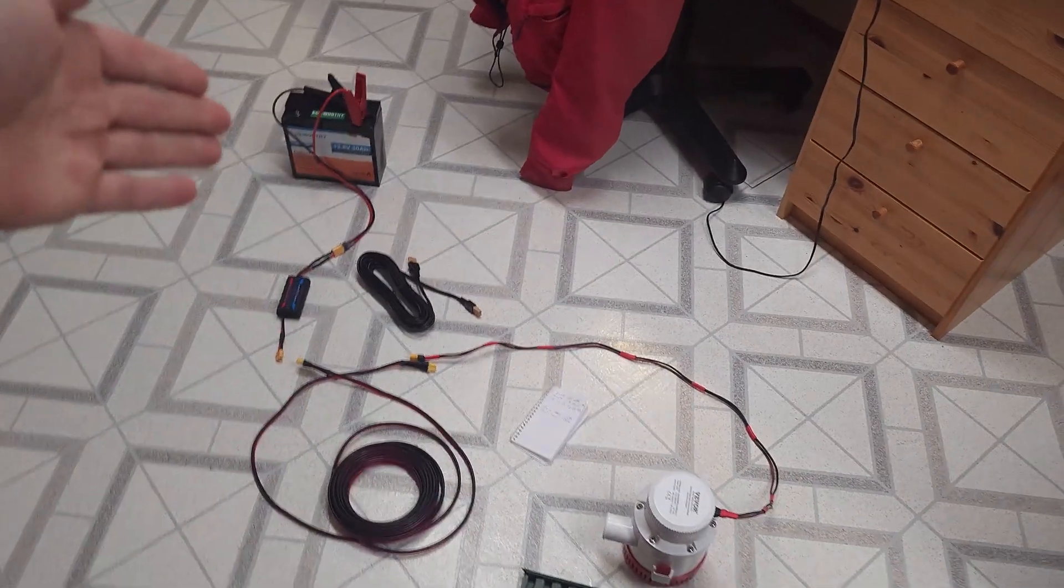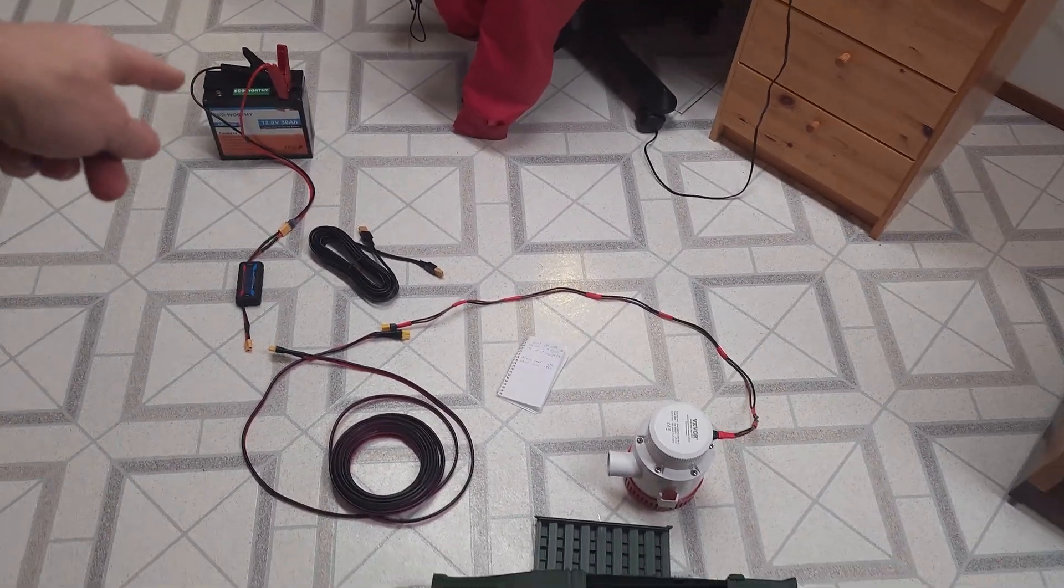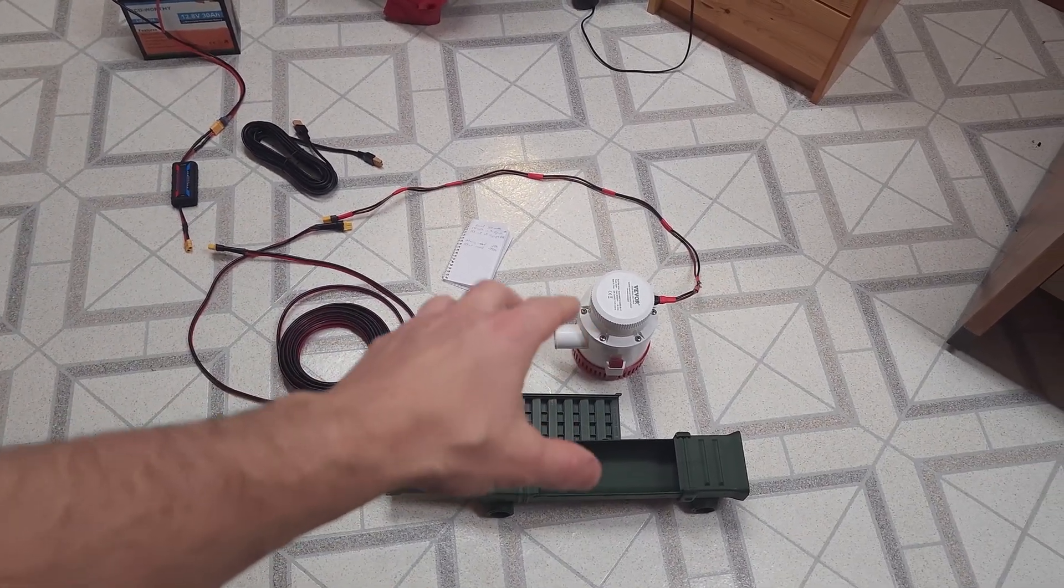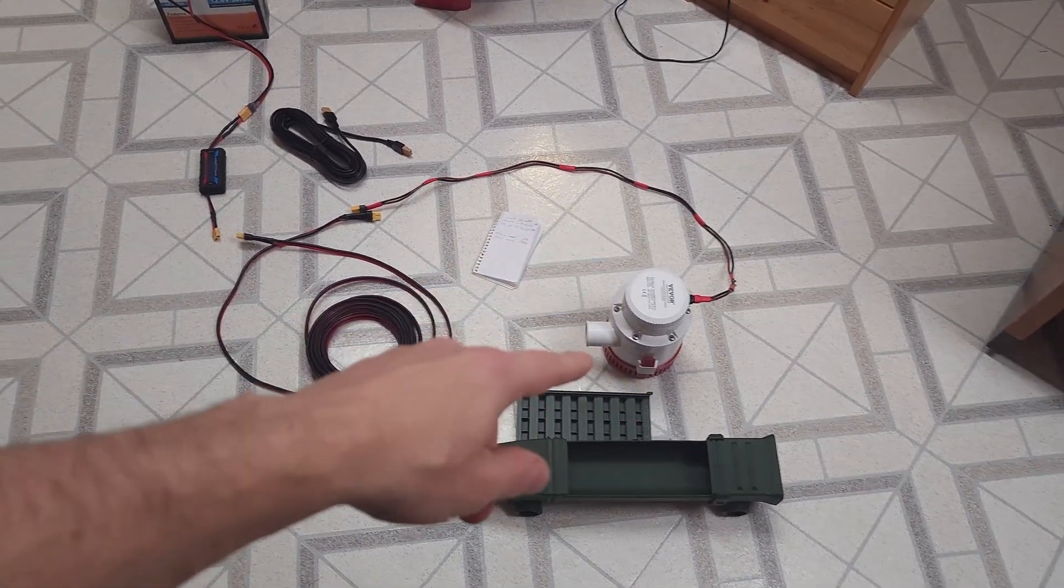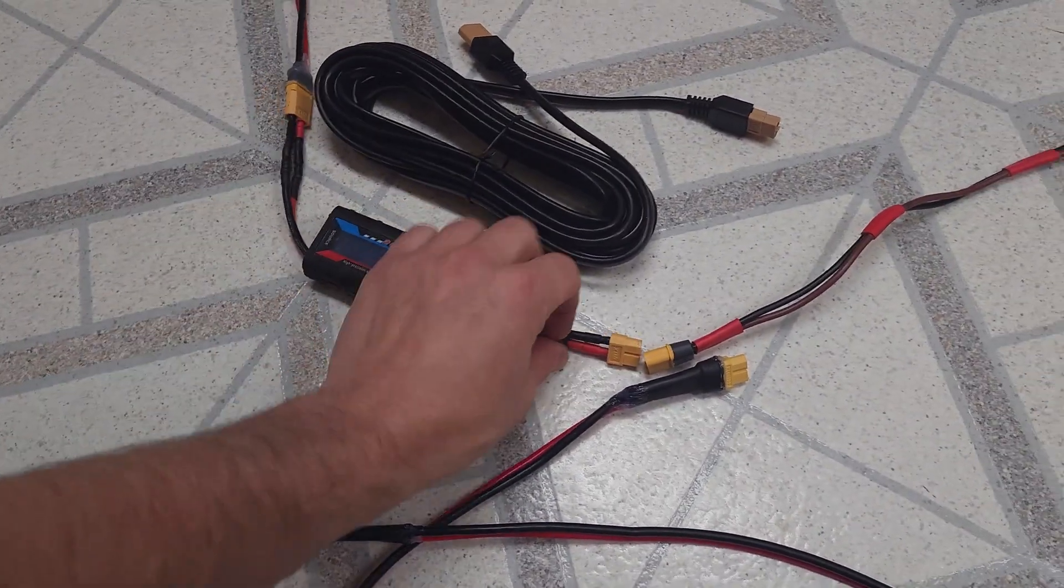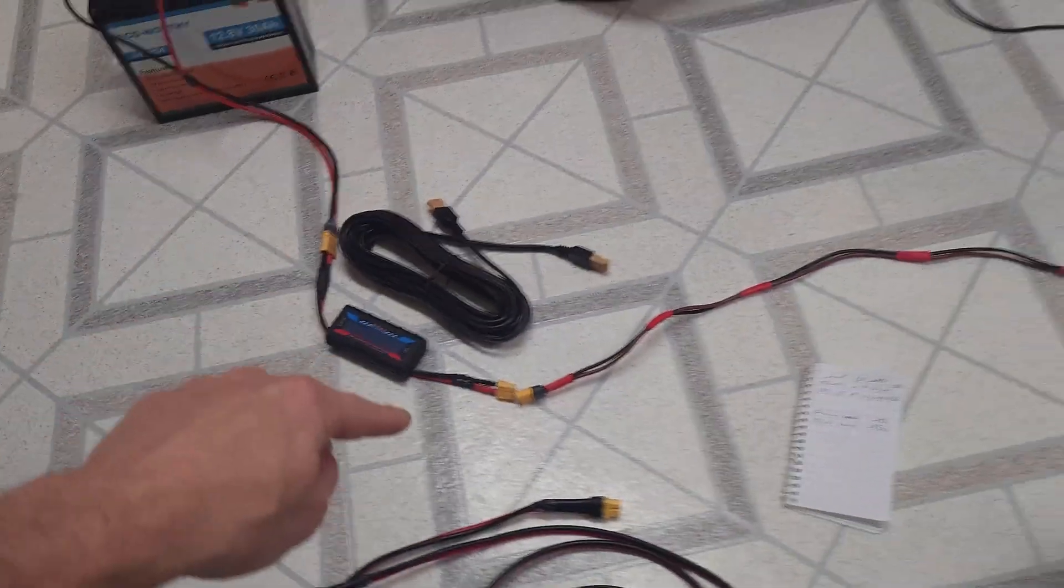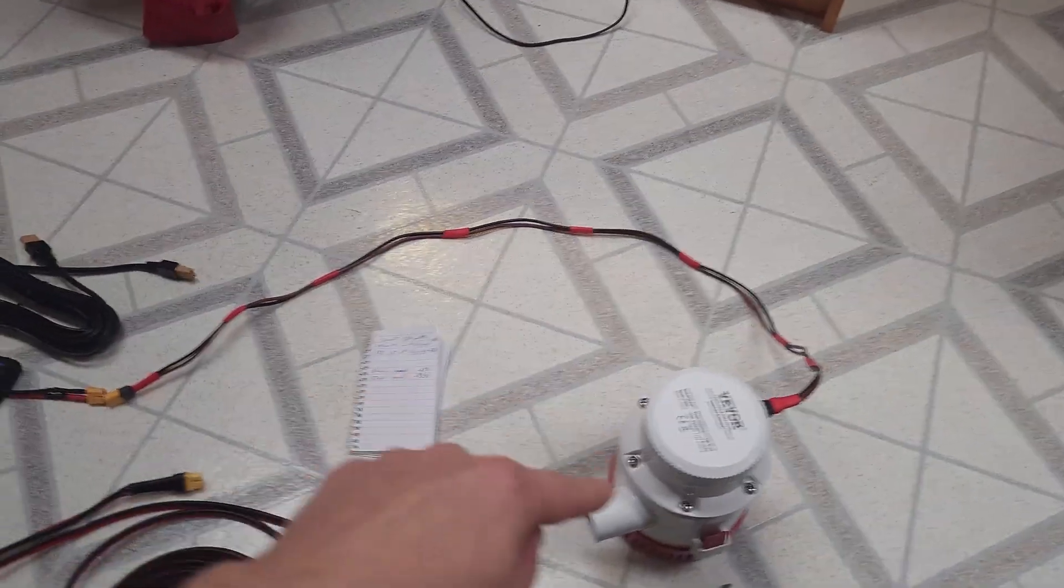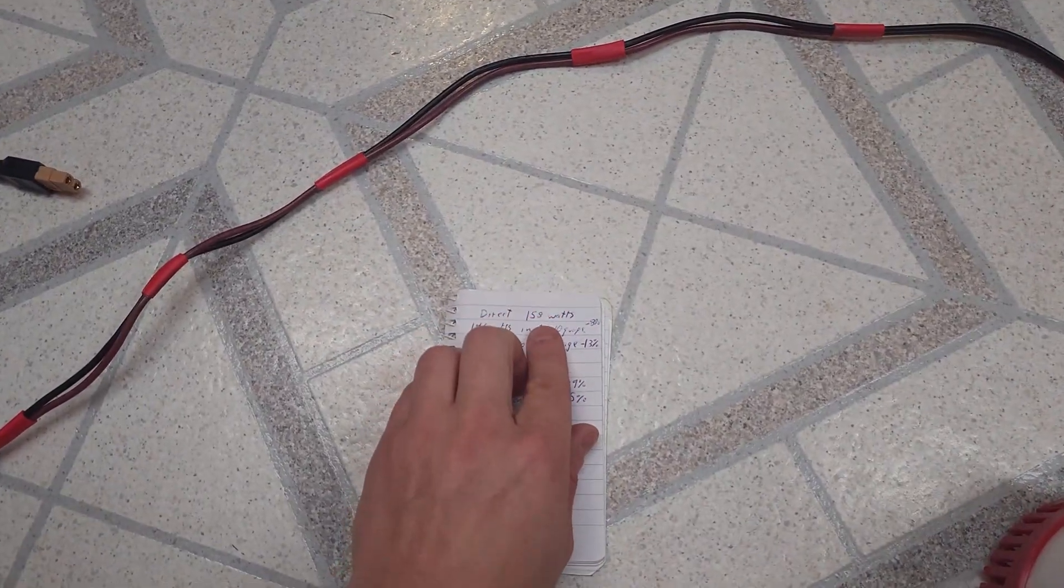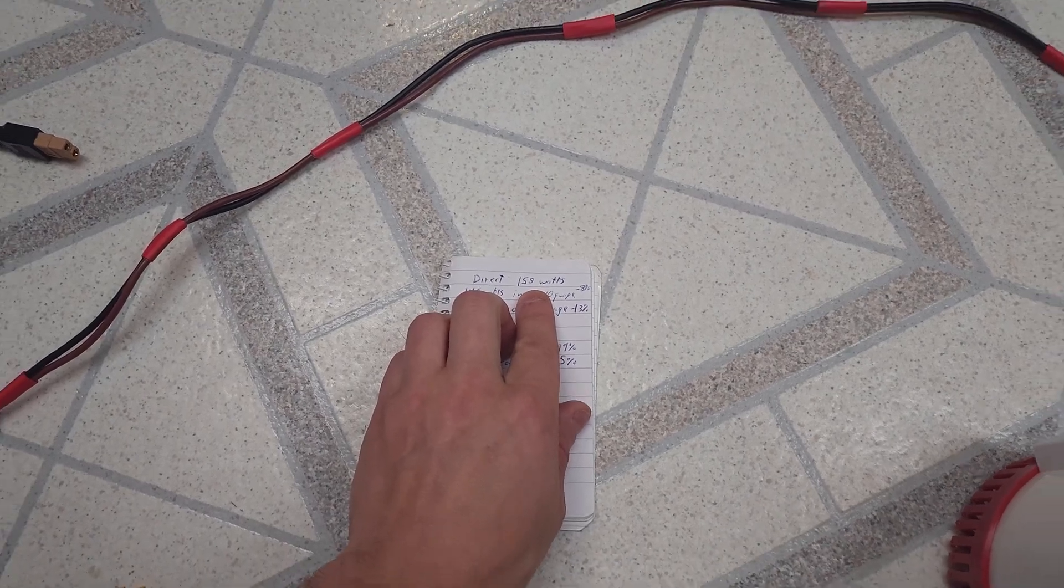This is a 12 volt battery, lithium iron phosphate, and this is a bilge pump. I had the bilge pump set up in water in the laundry tub and basically just ran it through this power meter right here directly, the path of least resistance, through this wire and to the bilge pump. The reading I got on the power meter was 158 watts.